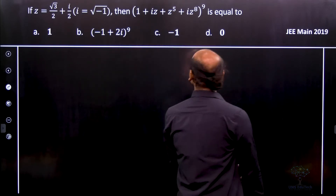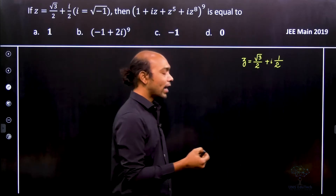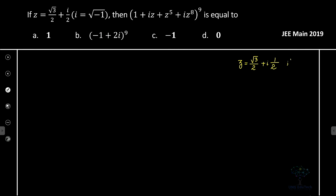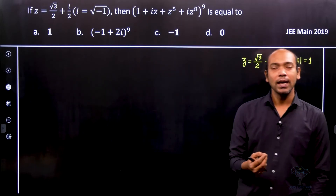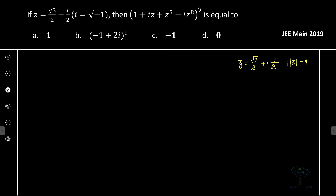Here z is given as √3/2 + i/2. In polar form we need to calculate the modulus of z, but here the mod of z is clearly 1, since 3/4 + 1/4 = 1. So this is a complex number with unit modulus. We need to find angle θ so we can rewrite it in cos θ + i·sin θ form. Therefore z can be written as cos(π/6) + i·sin(π/6).